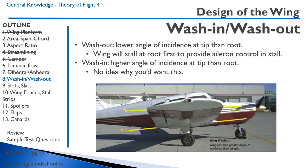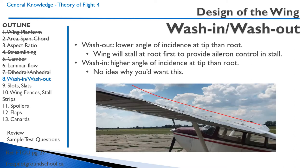Another design feature is washout and washin. Washout is where there is a lower angle of incidence at the tip than the root, so the wing will stall at the root first to provide aileron control during a stall. Washin is a higher angle of incidence at the wingtip than the wing root. Cessna aircraft have quite pronounced washout where the wing twists — it's supposed to do that. New students sometimes notice the aileron appears twisted on their walk-around; the reason is the aileron must match up with the twisted wingtip. You can clearly see the twisted aileron on a Cessna 180.